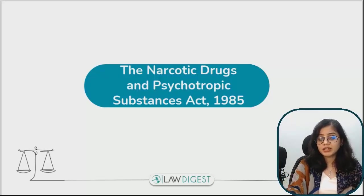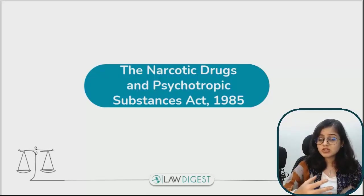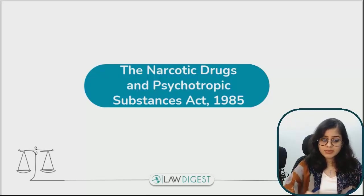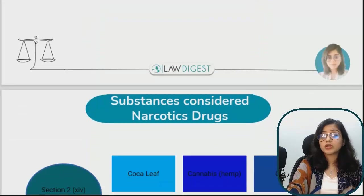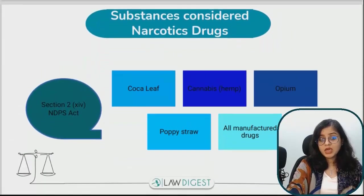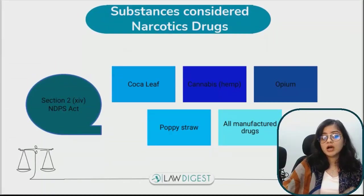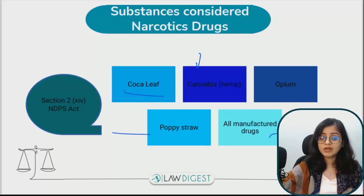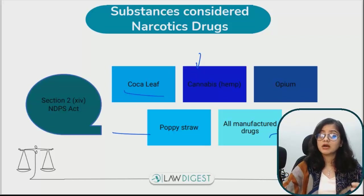First of all, let's talk about the act — the law on drug abuse and drug cases. If we talk about this act, what are the substances considered as narcotic drugs? If we look at Section 2's definition, it is clearly given that coca leaves, cannabis, opium, poppy straw, and some manufactured drugs which are listed in the schedule — we call them narcotic drugs.